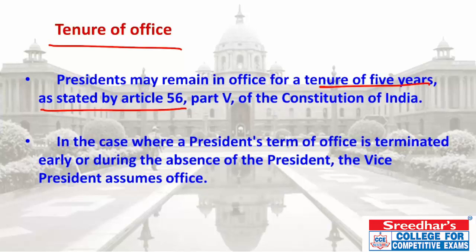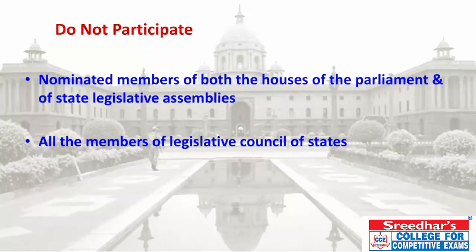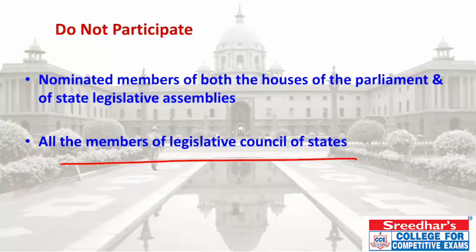The tenure of office of the President is covered under Article 56, Part 5 of the Constitution. The President serves a 5-year term. In case of termination or absence, the Vice President assumes the office. Notably, nominated members of both houses of Parliament and State Legislative Assemblies do not participate in the presidential election.